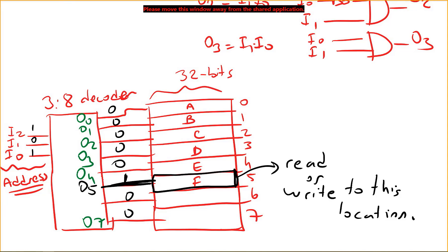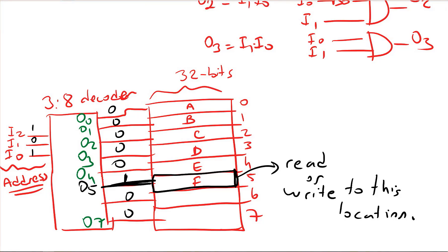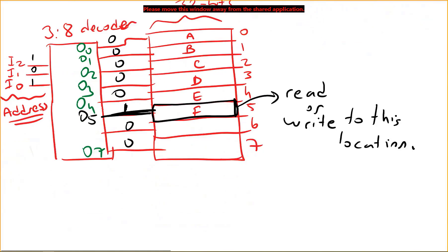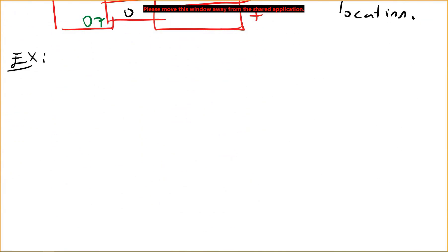Decoders are used as address decoders in memory so that only one memory location is selected for reading or writing at a time. In a single-port memory you can only access one location at a time. By using an address decoder, we enable only one location in the memory at a time.